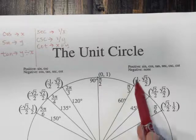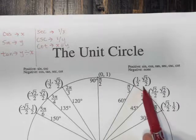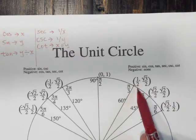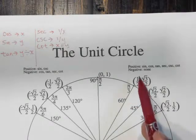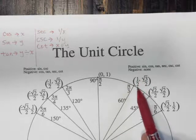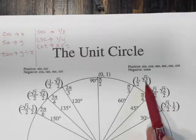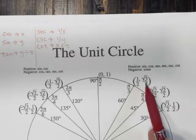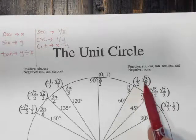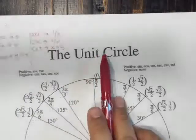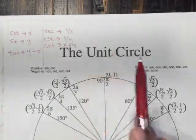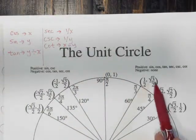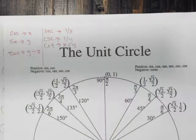The secant would be the reciprocal of the x-value, so the secant at π/3 would be the reciprocal of 1/2, which is 2. The cosecant would be 1 over the y-value, which is 2 over the square root of 3 — you would need to rationalize the denominator. Then the cotangent would be x divided by y, so 1/2 divided by square root of 3 over 2, and you'd do those computations.